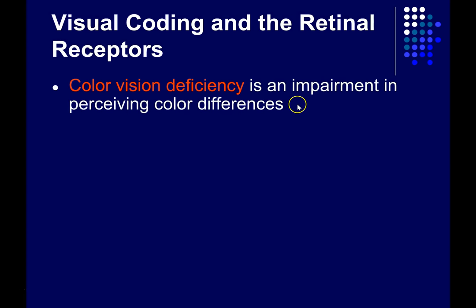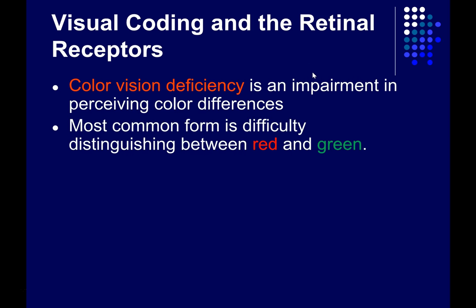A color vision deficiency is just an impairment in perceiving color differences. It's often referred to as color blindness. The vast majority of people with color vision deficiency can perceive colors to some degree — it's just that they're impaired in discriminating certain colors.